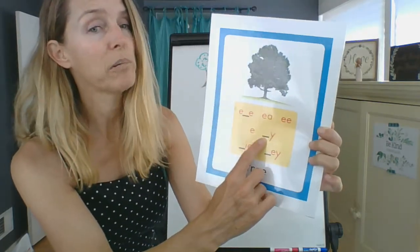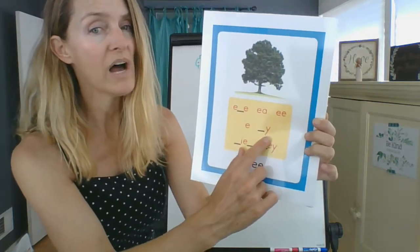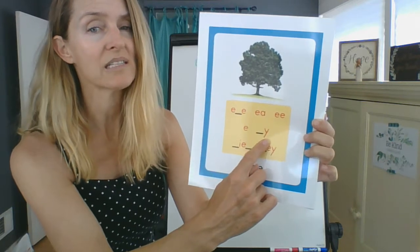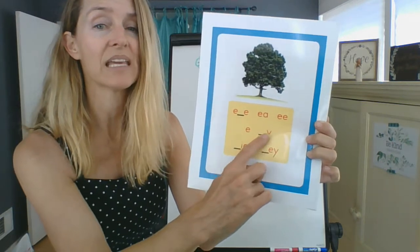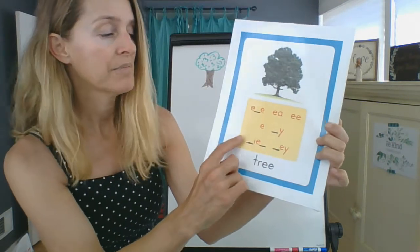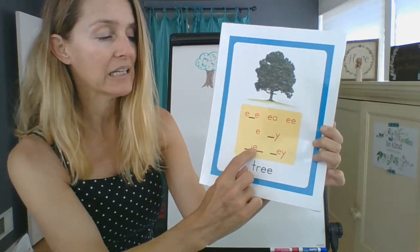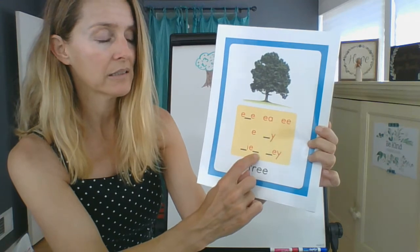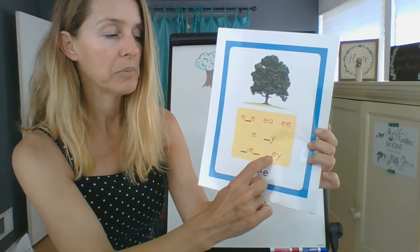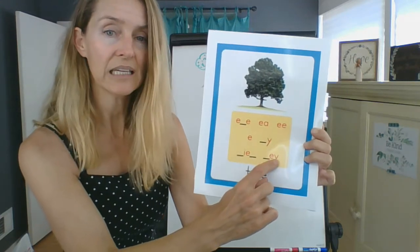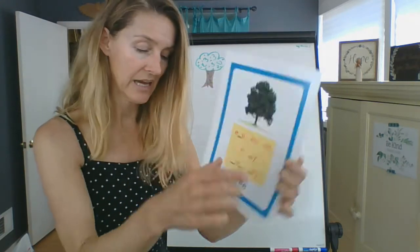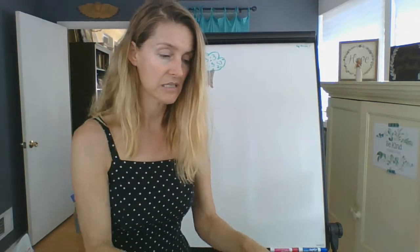Then you have blank-Y, so that's telling me it's at the end of the word. You have blank-IE-blank, and then blank-EY — again at the end.